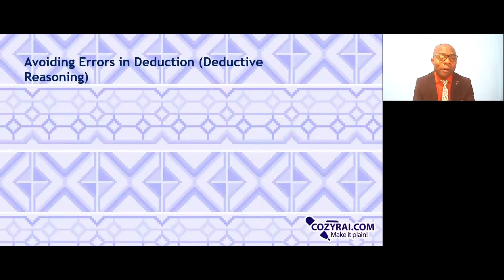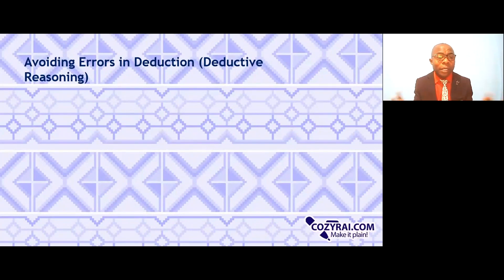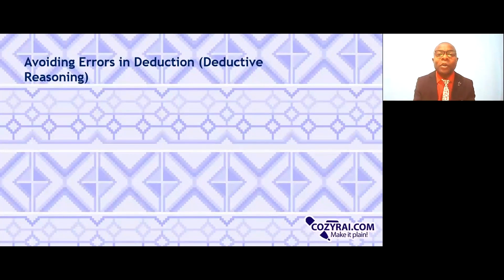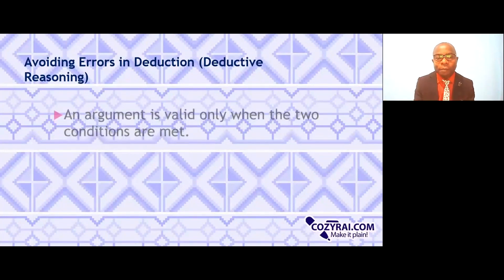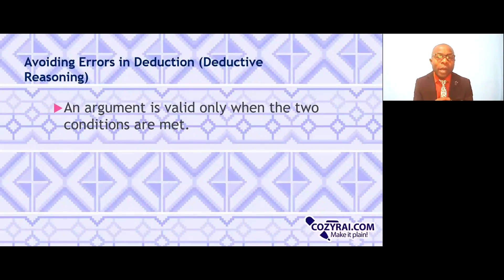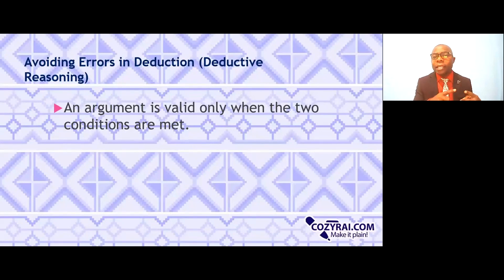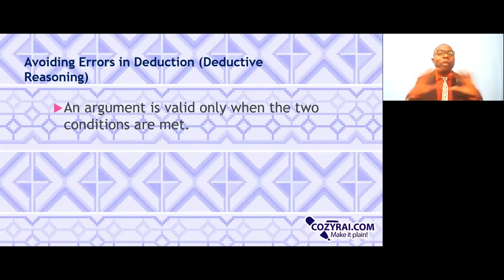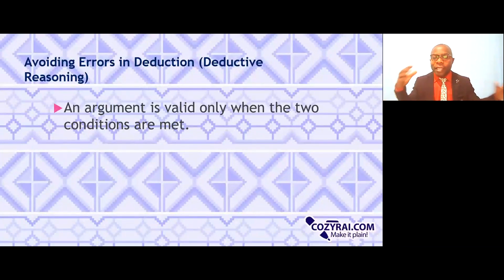Now, we need to avoid errors in deduction. As long as we are imperfect, we will make mistakes and commit errors. But we can avoid errors in deductive reasoning. An argument is valid only when two conditions are met — the conditions in the major premise and the minor or particular premise. If the two conditions are met, the conclusion will be absolutely true. But if the conditions are not met, the conclusion will be faulty or wrong.